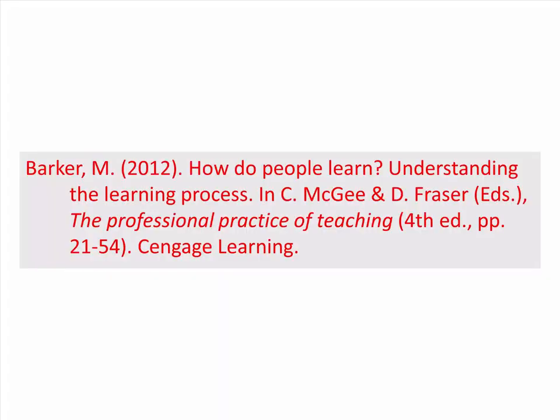The chapter author is listed in the author field. The date is in parentheses. The first title is for the chapter and is not in italics. Then there is the word IN, indicating that it can be found in this book. The editors' names are in a different format: initial, full stop, space, and surname. In parentheses after their names is EDS, to indicate that they are the editors of this book. Then the book title in italics. In parentheses after this is the edition number and page numbers of the chapter. Finally, the source details.